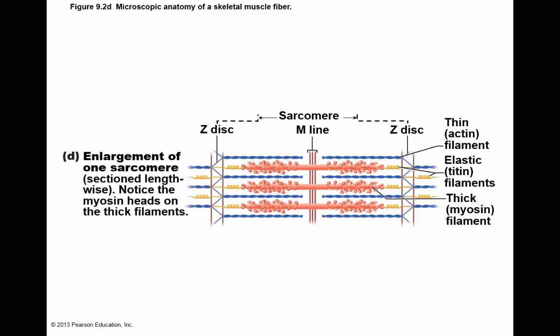Zooming into the sarcomere, the myosin has cool little heads on it. At the ends of the myosin and the ends of the actin, you have elastic filaments called titin. Based on their spring-like shape, they help pull things back — like the rubber band effect. When we stretch our muscles, titin helps them recoil. It's called titin protein and it's very strong.